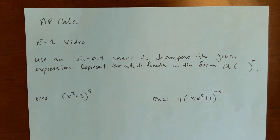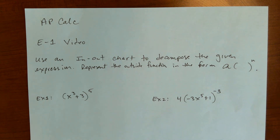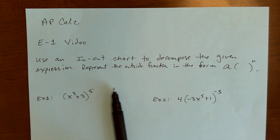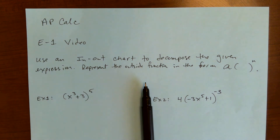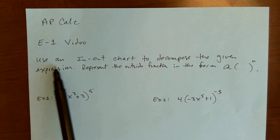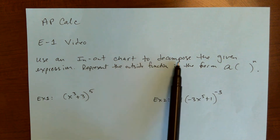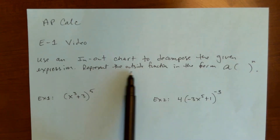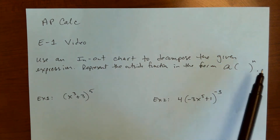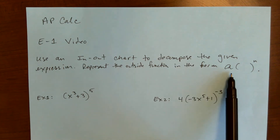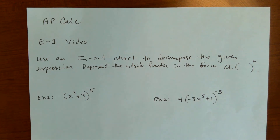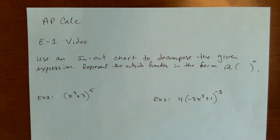Okay guys, so here's E-1. This should be pretty straightforward and not very long. So use an in-out chart to decompose the given expression. Represent the outside function in the form A-blank to the N. So right now we've got the limit process to find a derivative — that's the longest way. We have power rule, product rule, quotient rule. There is a fourth rule called the chain rule, and this E-1 is getting us ready to use the chain rule.